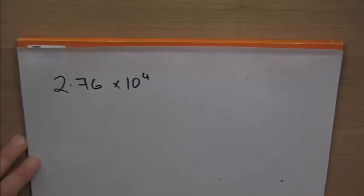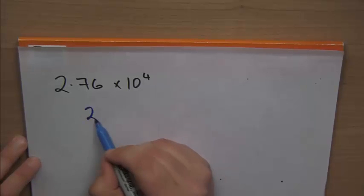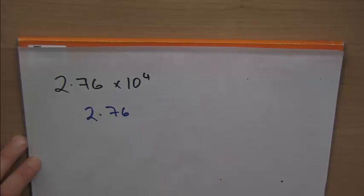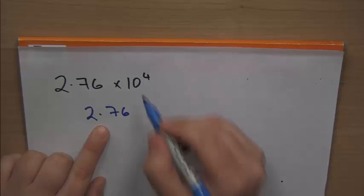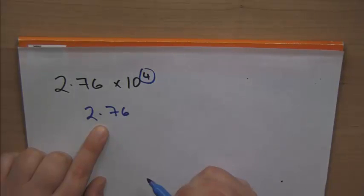I'm going to show you how to do that. First of all, write down 2.76. Now, we're going to move this decimal place 4 places.